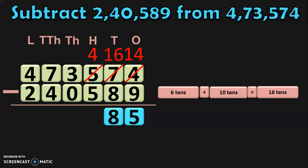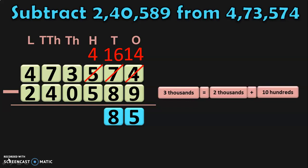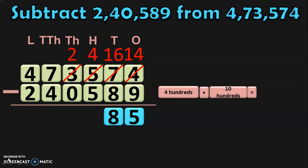Now, move on to the hundreds place where we have to subtract 4 minus 5. Since 5 is greater than 4, move to the thousands place where you have 3 thousands. 3 thousands can be regrouped as 2 thousands plus 10 hundreds. Retain the 2 thousands in the thousands place and take the 10 hundreds to the hundreds place. In the hundreds place, we already have 4 hundreds. 4 hundreds plus 10 hundreds gives you 14 hundreds. 14 minus 5 gives you 9.